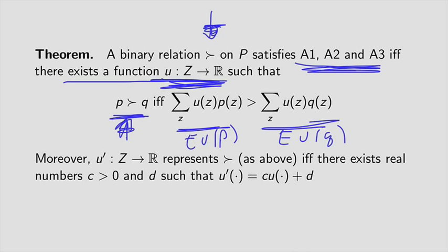Moreover, and I'll talk about this more in the later lectures, this function is unique up to linear transformations. That's what this says, that there might be another utility function that represents the agent's preferences in this way, but if that's the case, then that utility function is going to be a linear transformation of the utility function that we constructed up here. So this is the von Neumann-Morgenstern representation theorem, and in the next series of lectures, I want to go through explaining how you go about proving this for the special case when Z, the set of prizes, is finite.